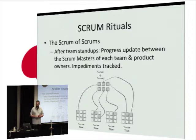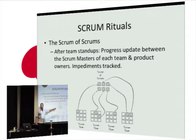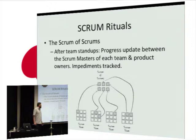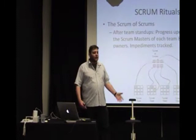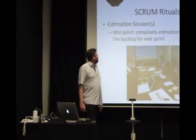The next ritual is the Scrum of Scrums. At one point at Philips we had six or seven teams running concurrently. After all teams have done their morning stand-up, the Scrum Masters come together in a separate meeting and update each other and the product owner on impediments, team progress, and sprint forecast. An impediment is anything that takes more than 24 hours to fix or can't be resolved internally. It's the Scrum Master's responsibility to bring them into the Scrum of Scrums and remove them.